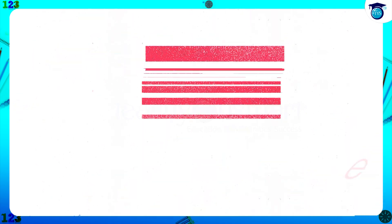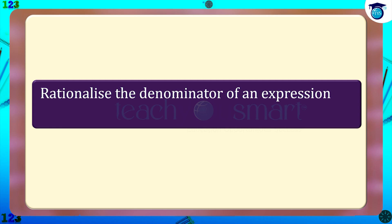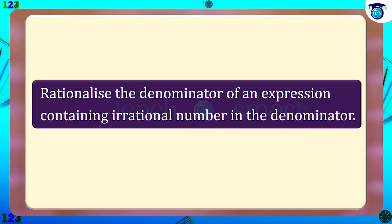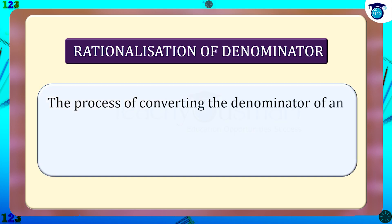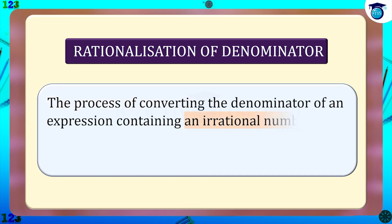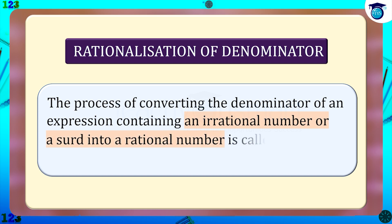Now let us see how we can rationalize the denominator of an expression containing an irrational number in the denominator. The process of converting the denominator of an expression containing an irrational number or a surd into a rational number is called rationalization of the denominator.